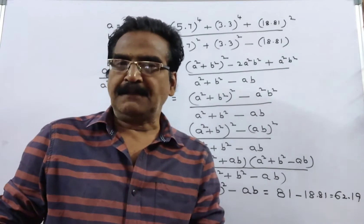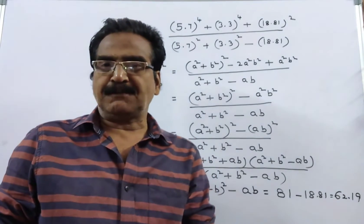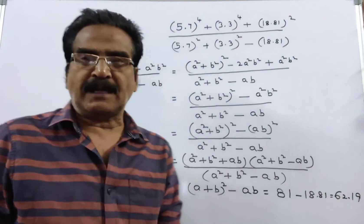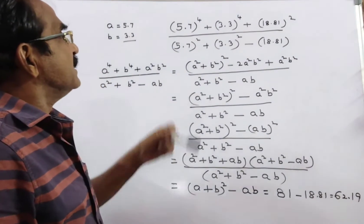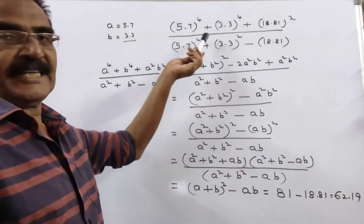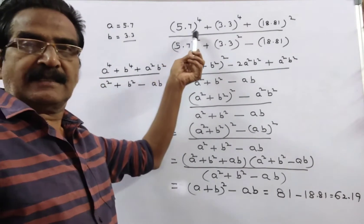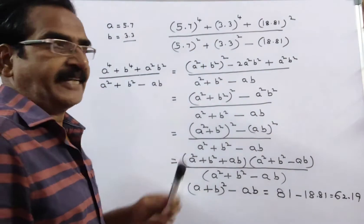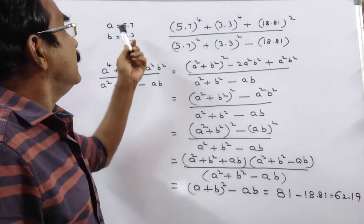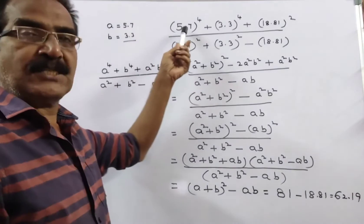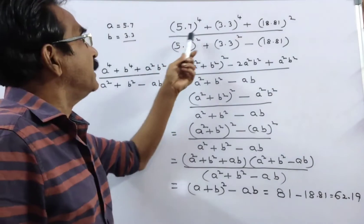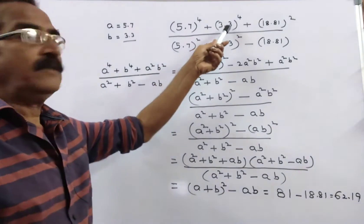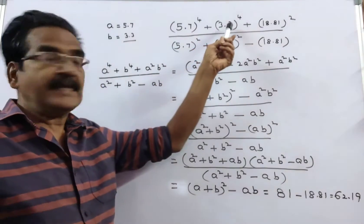Hi friends, good morning. Please look at the next problem in algebra. Friends, this is the given expression. Say A is equal to 5.7 and B is 3.3.